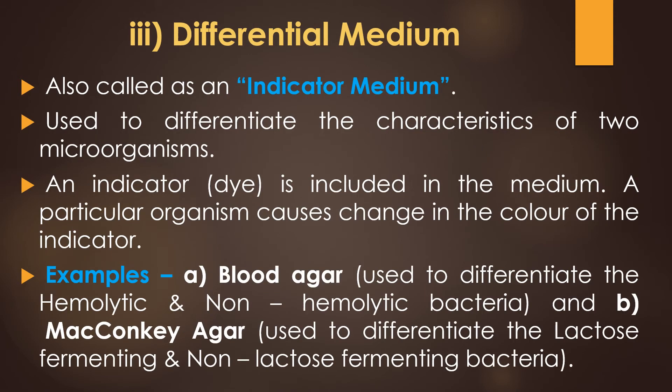The third type is differential medium, also called indicator medium. It is used to differentiate characteristics of two microorganisms using an indicator dye included in the medium. A particular organism causes a color change in the indicator. Examples are blood agar, used to differentiate hemolytic and non-hemolytic bacteria based on alpha, beta, and gamma hemolysis, and MacConkey agar, used to differentiate pink-colored lactose-fermenting colonies from non-lactose-fermenting colonies.